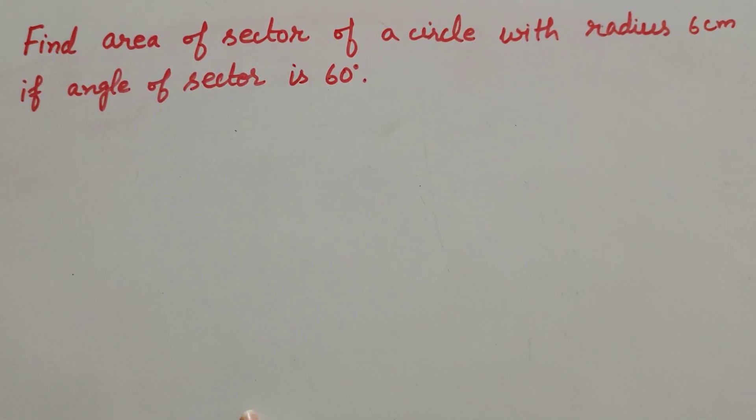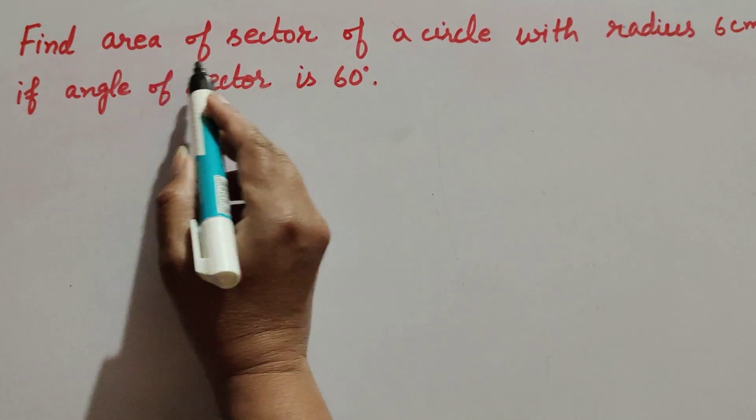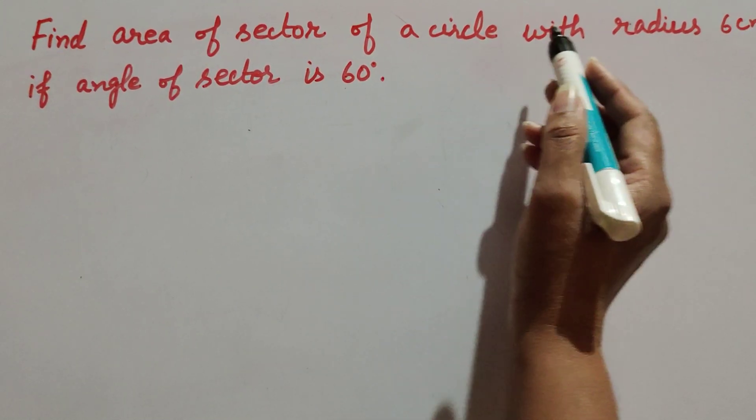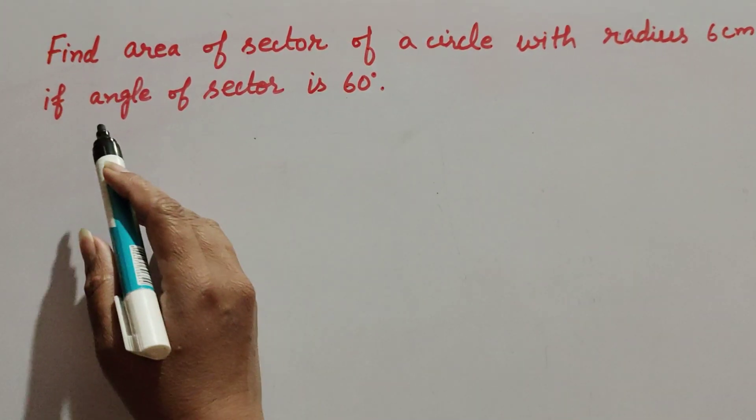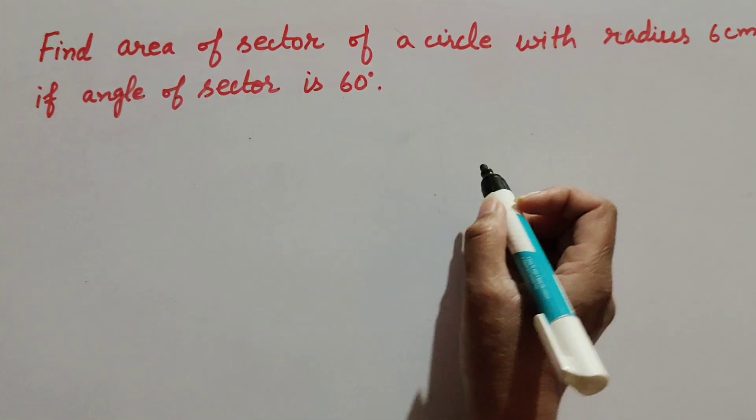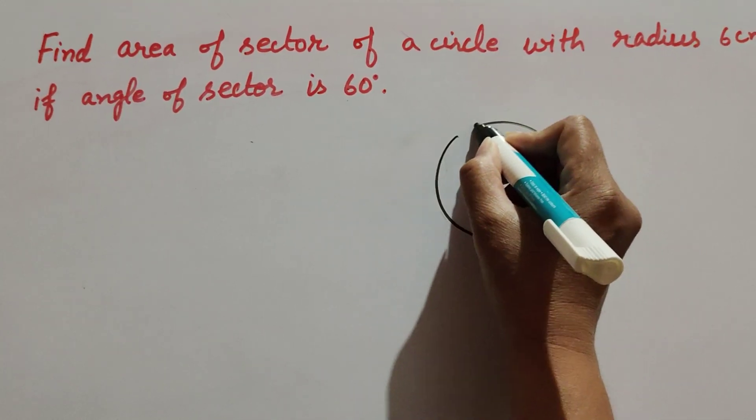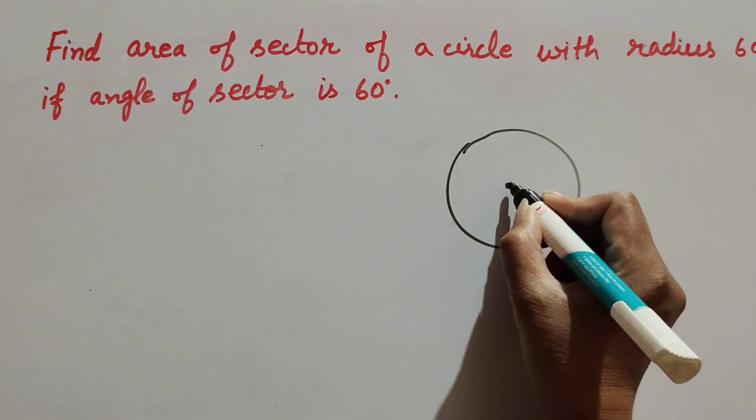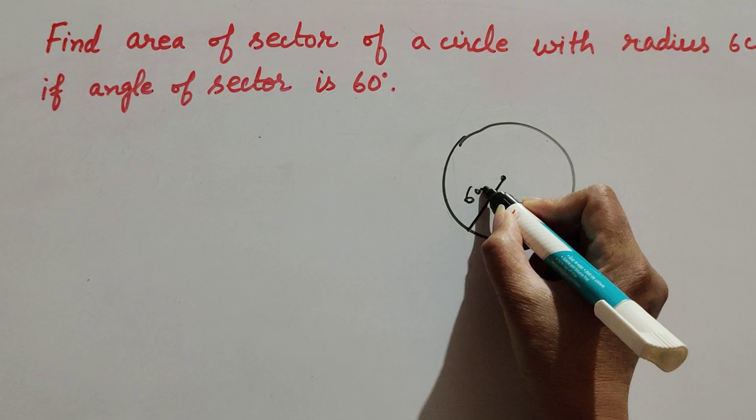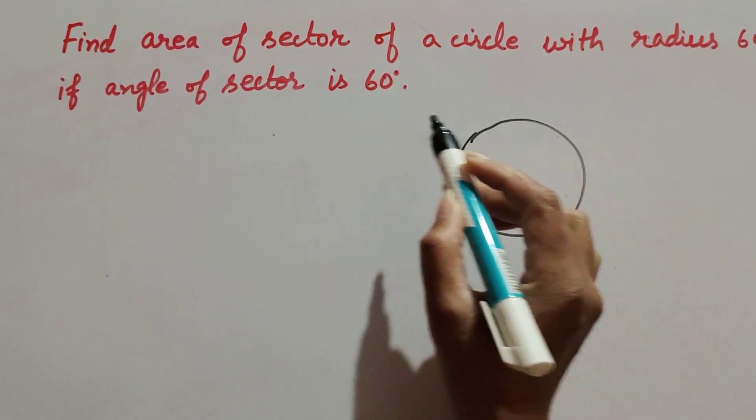Hello friends, welcome to my channel. In this video we discuss: find area of sector of a circle with radius 6 cm if angle of sector is 60 degrees. So given is a circle of radius 6 cm and angle of sector is 60 degrees.